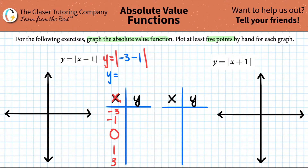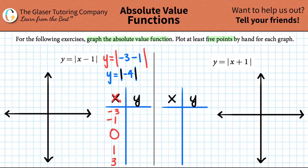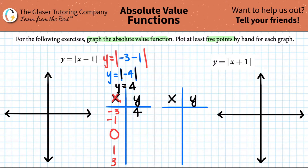Y equals the absolute value of negative three minus one, which is negative four. Now we apply the absolute value function — remember, the absolute value of whatever is inside those brackets always gives you a positive answer. So y equals four. The absolute value takes that number and turns it positive, so the y answer is four. That gives us a point at negative three, four.